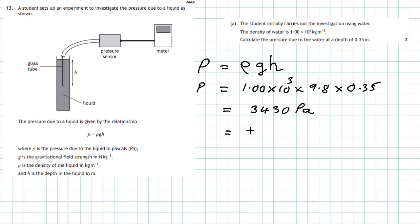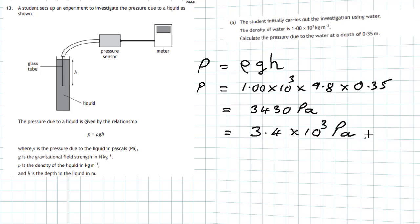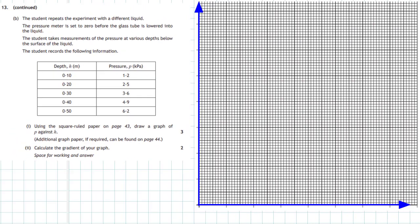We can tidy that up by expressing it in standard form as 3.4 times 10 to the power 3 pascals — two marks. Question 13 part b: the student repeats the experiment with a different liquid. The pressure meter is set to zero before the glass tube is lowered into the liquid.